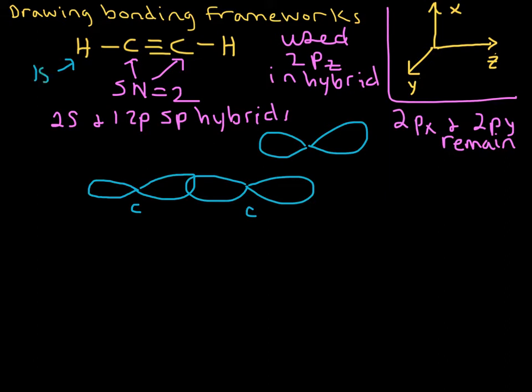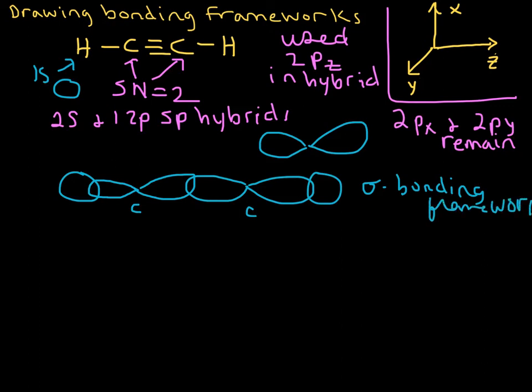That's a 1s atomic orbital on each of those hydrogens. And those are spherical. So let's go ahead and draw those on. I made that one a little bit too big. You get the idea. This is the sigma bonding framework. This was our hydrogen, and our hydrogen here.